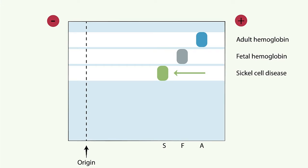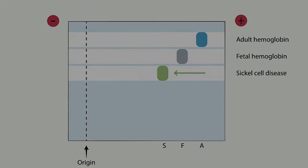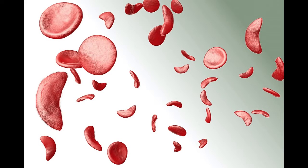Recall again that sickle cell disease is characterized by hemoglobin S which results from point mutation that causes single amino acid glutamic acid to be replaced with valine.